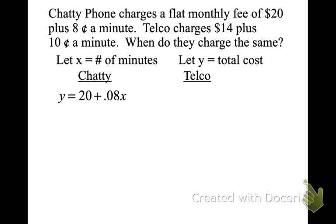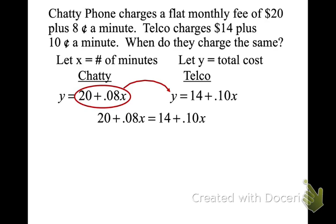And it's 8 cents. So remember, it's not just 8. It's 0.08. It's not 0.8. That would be 80 cents. And Telco would be 14 plus 10 cents. So it would be y equals 14 plus 10 hundredths x, or 1 tenth x. Now, since they're both equivalent, we can set them equal to each other. And then I would clear. I think I'd multiply everything by 100. I want you guys to clear if possible. A lot less room for error. So I'm going to multiply everything by 100.